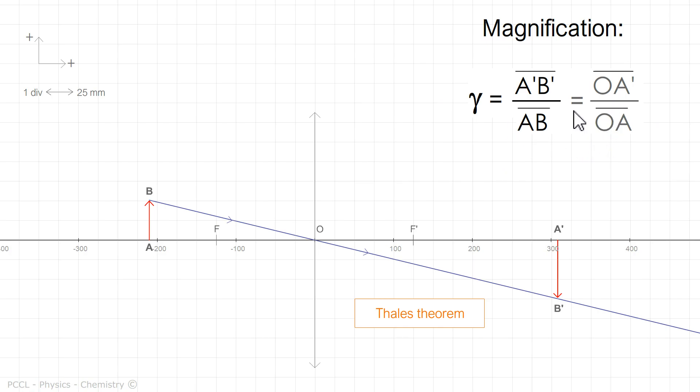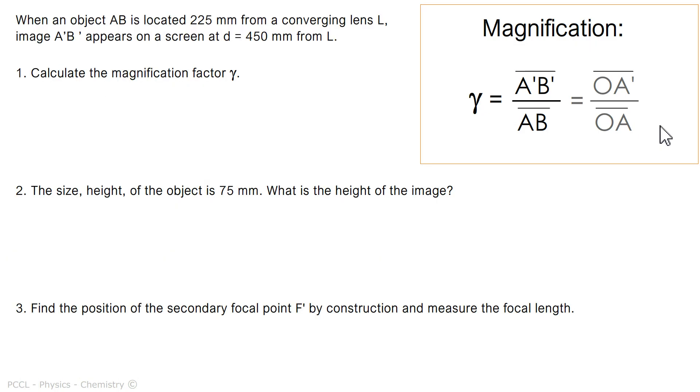That is to say that the magnification is the ratio of the sizes. But it is also the ratio of the distances, from the lens to the image, over the distance from the lens to the object. An exercise to illustrate all of this. You can stop the video if you want to do the exercise, otherwise I will continue.